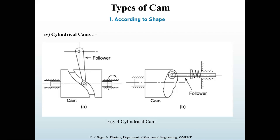The fourth type is the cylindrical cam — a cylinder with a circumferential contour cut on the surface, rotating about its axis. The follower motion can be two types. In the first type, a groove is cut on the surface and the roller follower has a positive oscillating motion. In another type, it is an end cam where the end of the cylinder is the working surface and a spring-loaded follower translates along or parallel to the axis of the rotating cylinder. The cylindrical cam is also known as a barrel cam or drum cam.